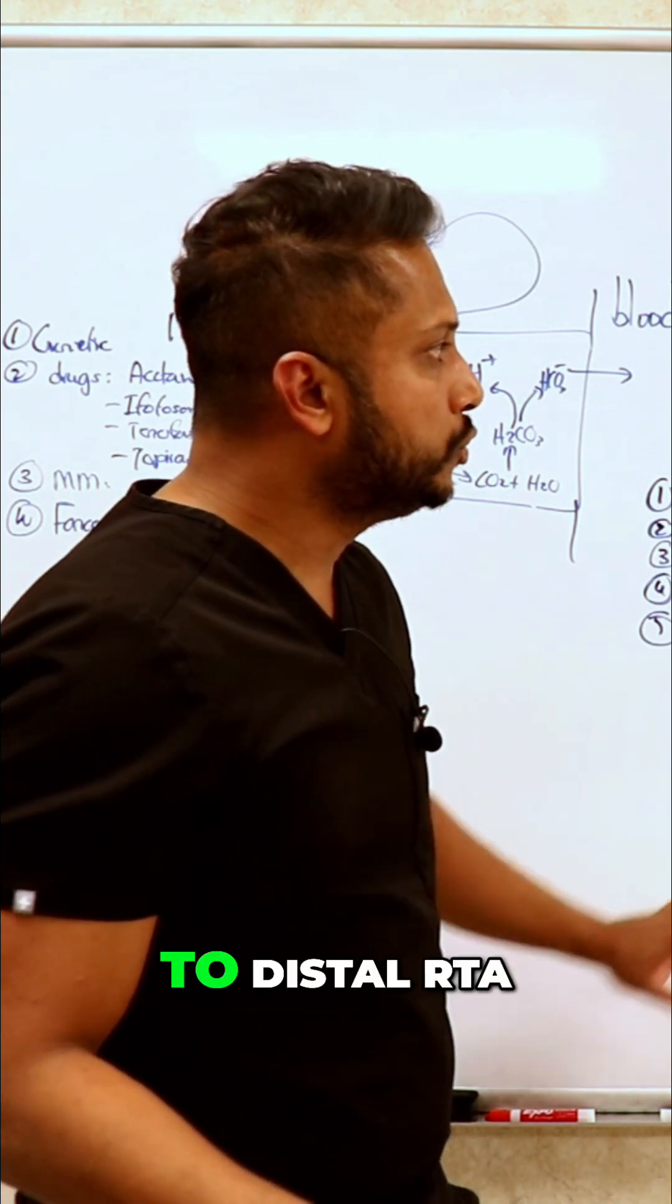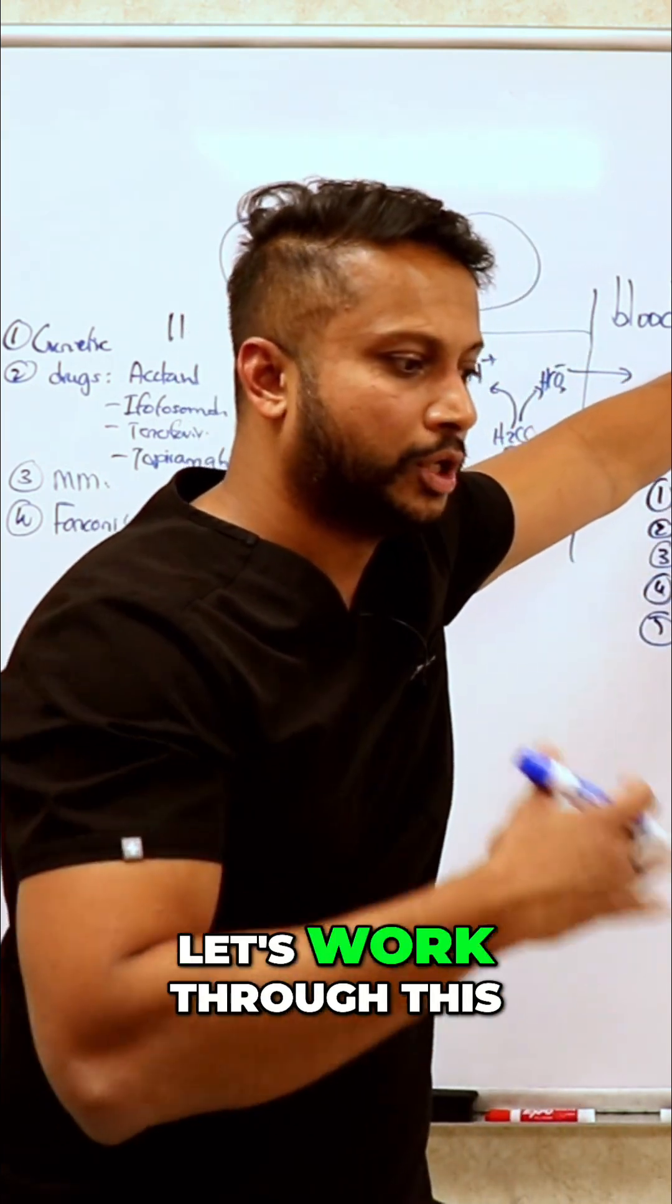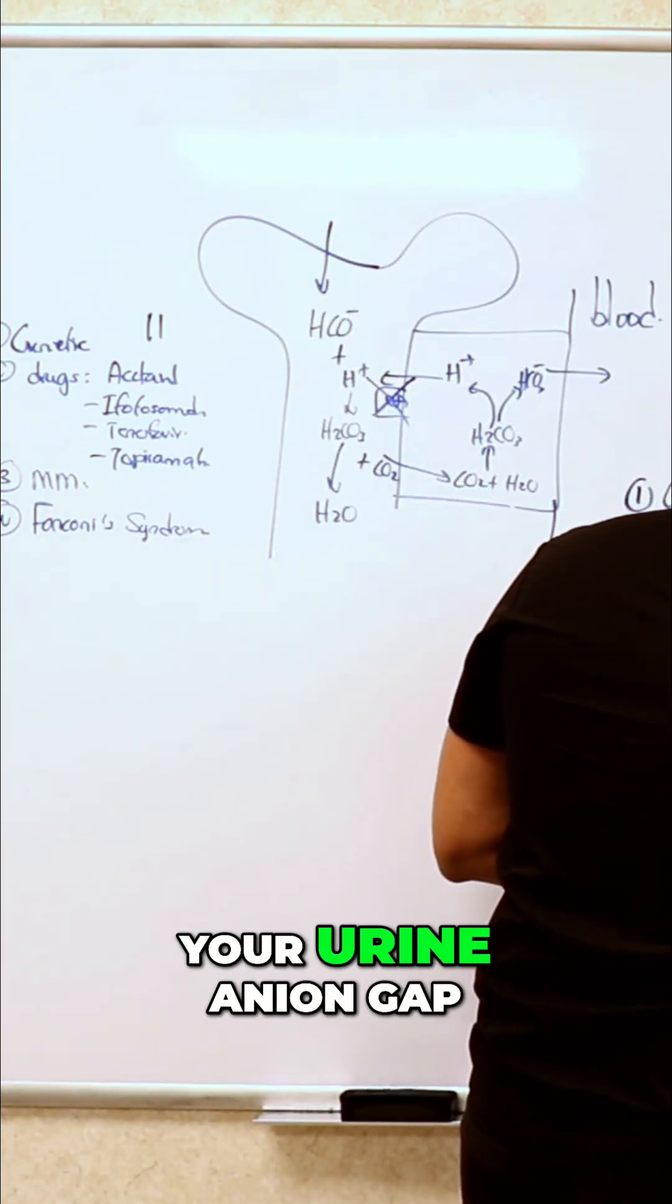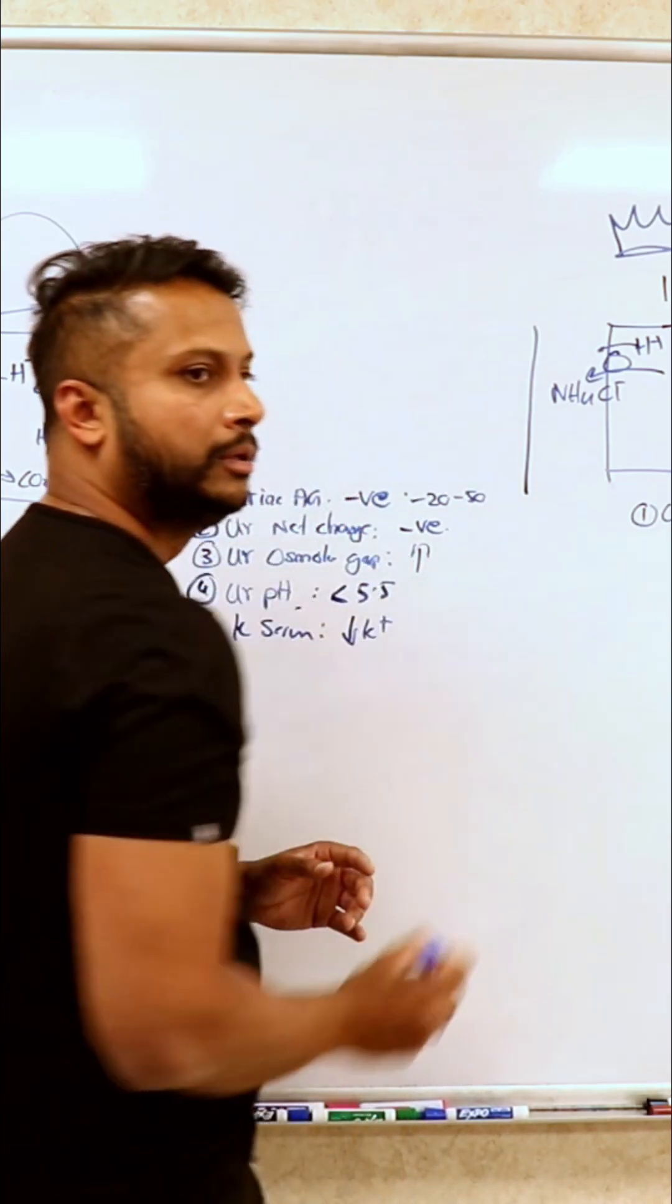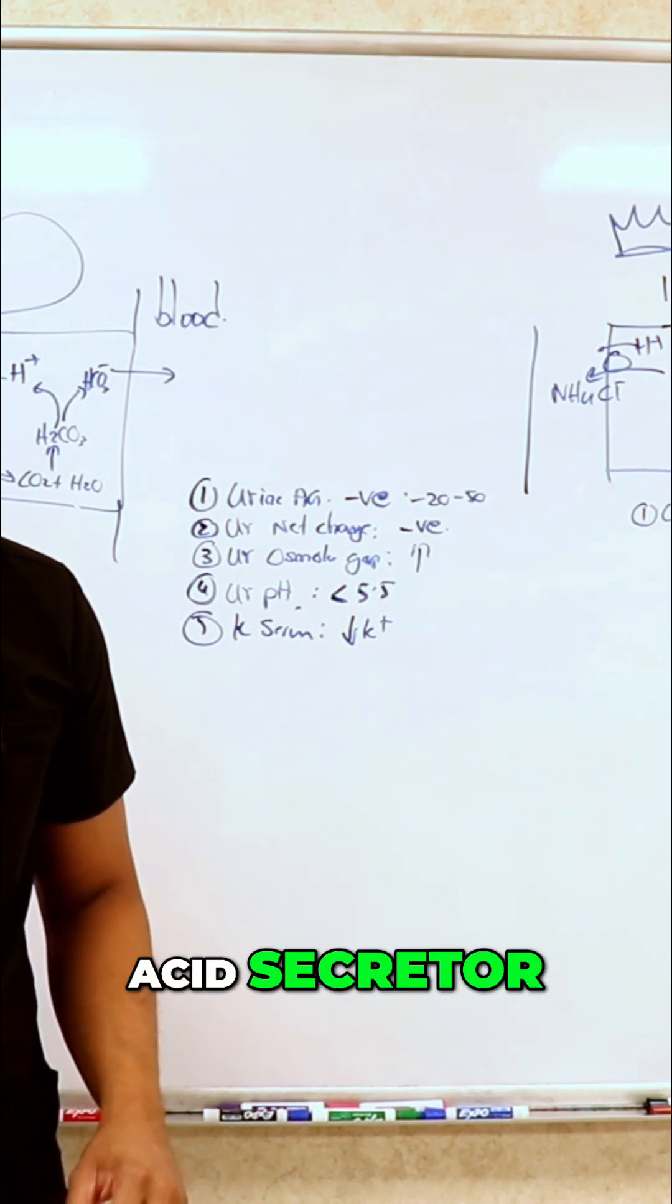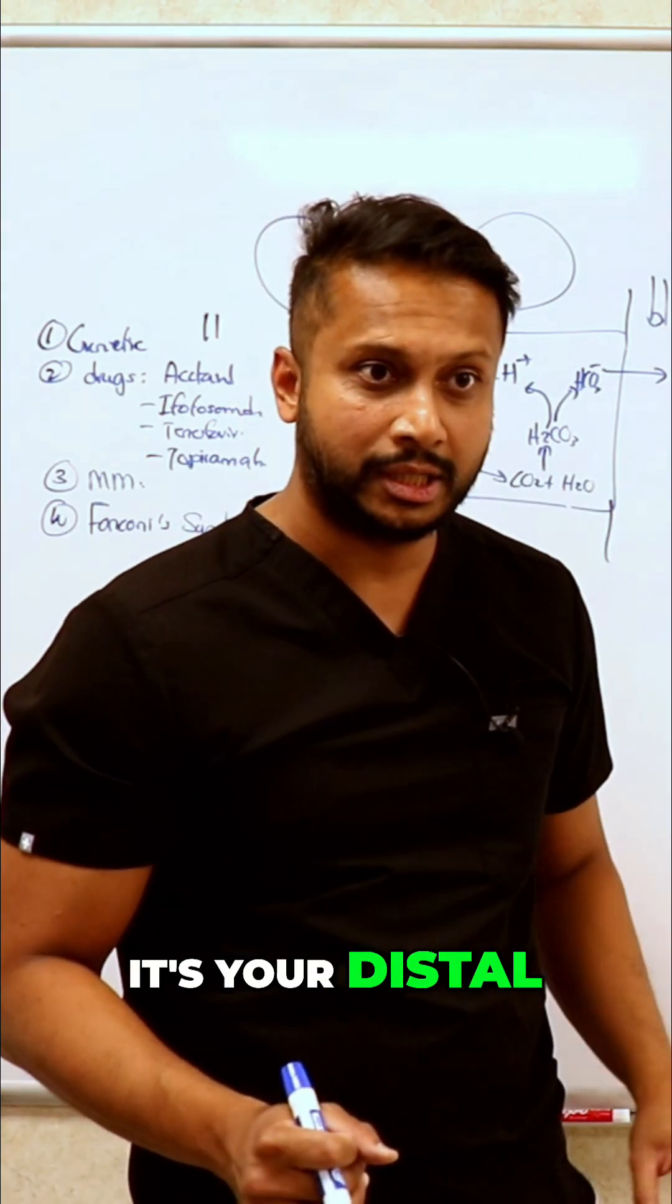When it comes to distal RTA, let's work through this whole process again. Number one: what would happen to your urine and ion gap? Who is the master acid secretor? It's your distal. If you take this guy out, are you going to secrete H+? No.